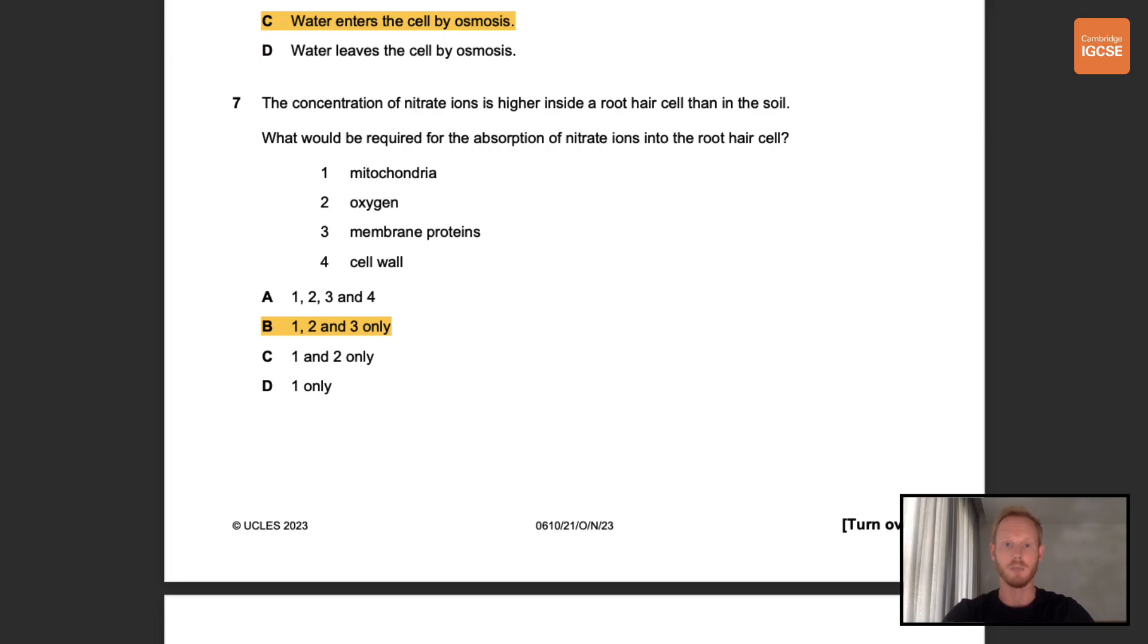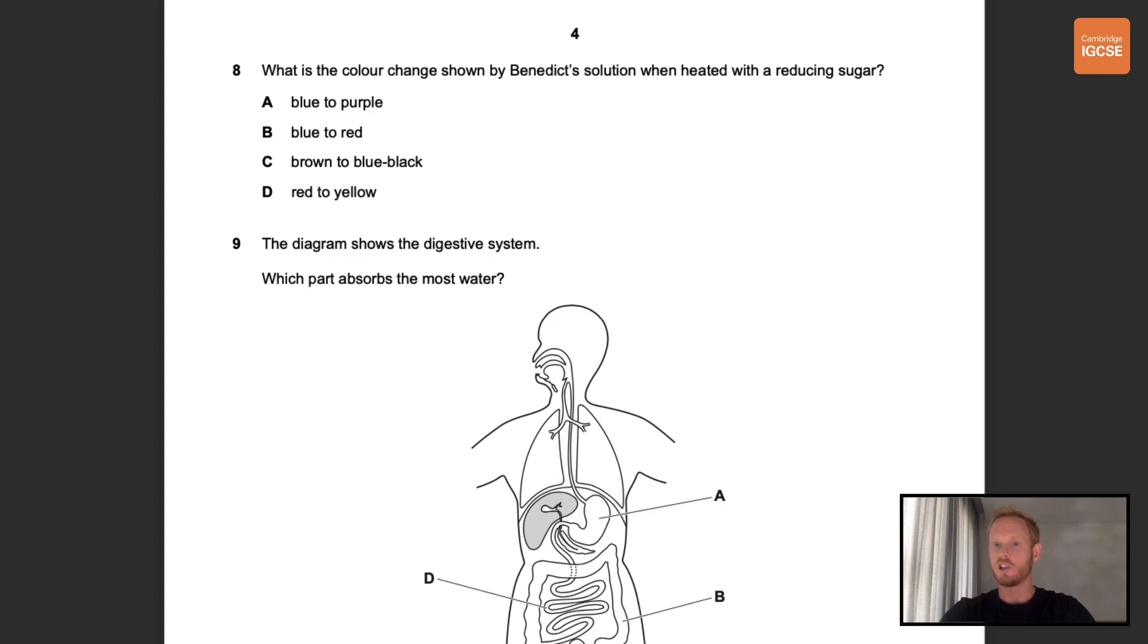Number eight. What is the color change shown by Benedict's solution when heated with a reducing sugar? The answer to this one is B, blue to red. Now there are several chemical tests that you need to know about, so if you need a recap go and watch my video on topic 4.1.